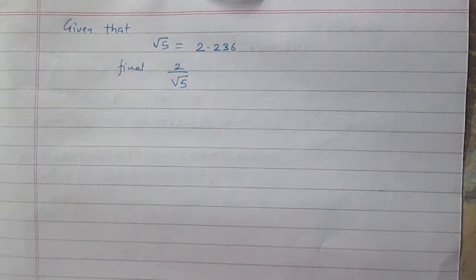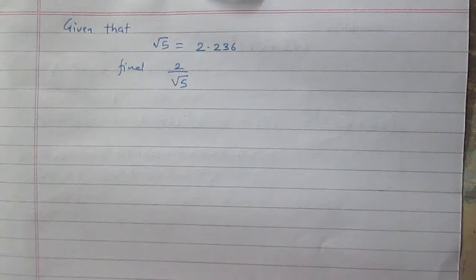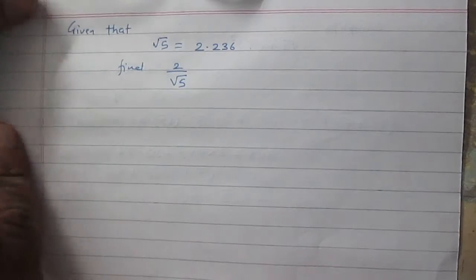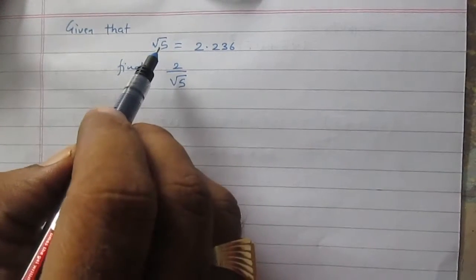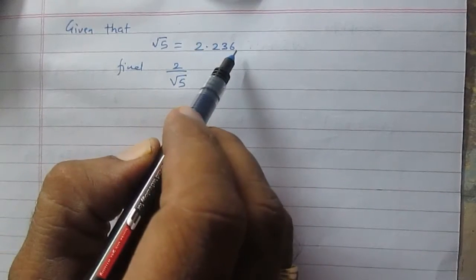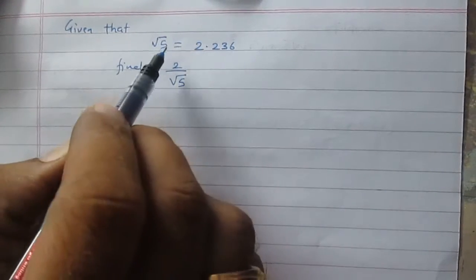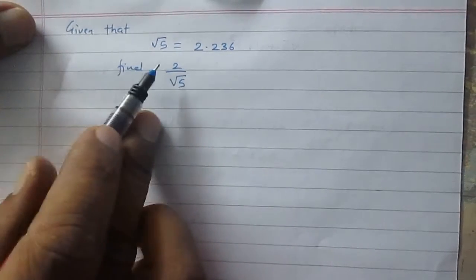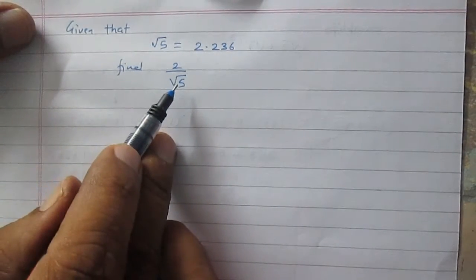Given that square root of 5 is equal to 2.236, find 2 divided by square root of 5. We are given the approximate value of square root of 5, that is 2.236, and according to this value, we are to find the value of 2 upon square root of 5.